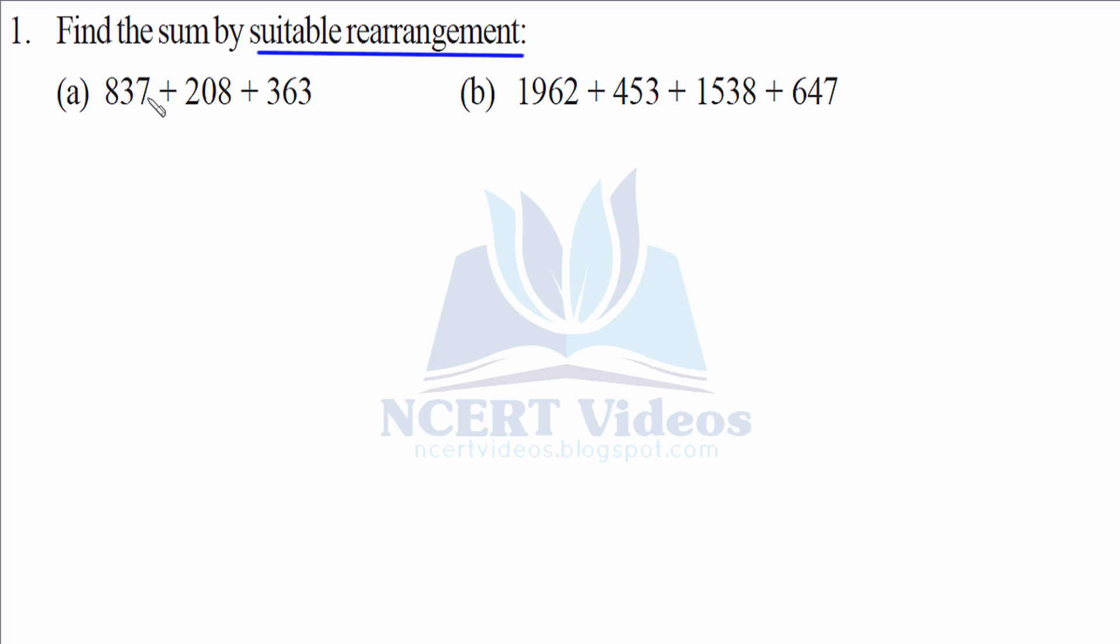Look, 7 plus 3 would give you something in zeros and adding zeros is a simple task. So we will first arrange it as 837 plus 363 plus 208. When we add these two grouped numbers we get 7 plus 3 is 10. It would again give us 10, when carry 11 plus 1 gives you 12. Look how this calculation becomes easier.